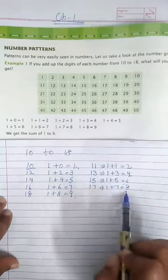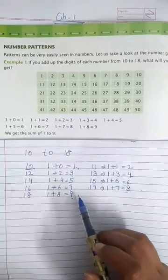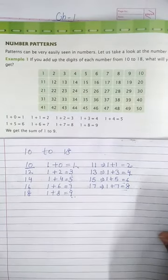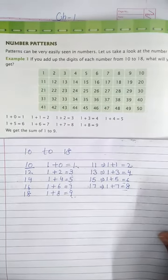5, 6, 7, 8 and 9. So what we get, we get the sum of the digits as 1 to 9. All right. Thank you.